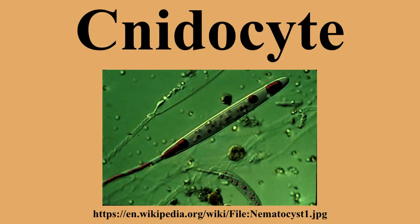Each Snidocyte contains an organelle called a Snidocyst, which comprises a bulb-shaped capsule containing a coiled hollow tubule structure attached to it. The immature Snidocyte is referred to as a Snidoblast.